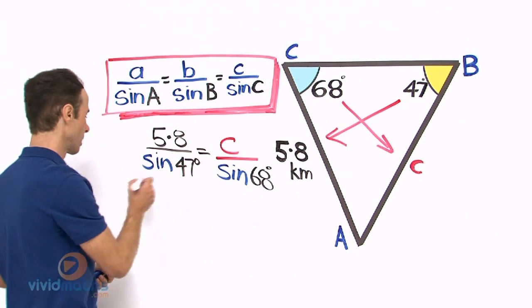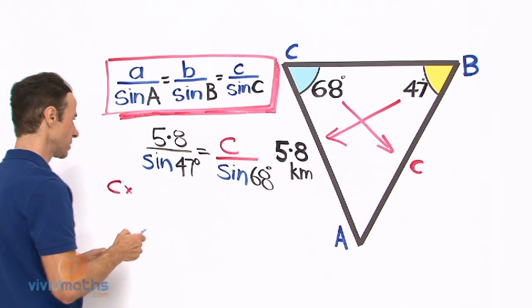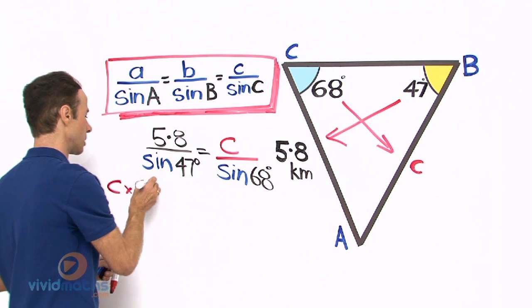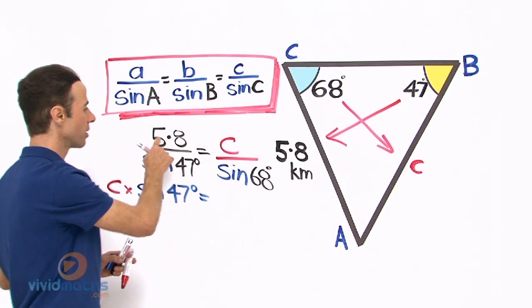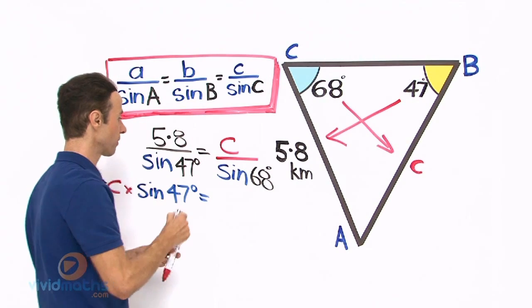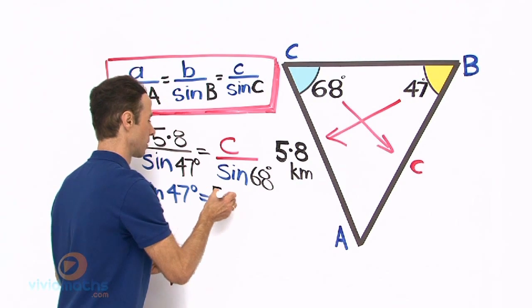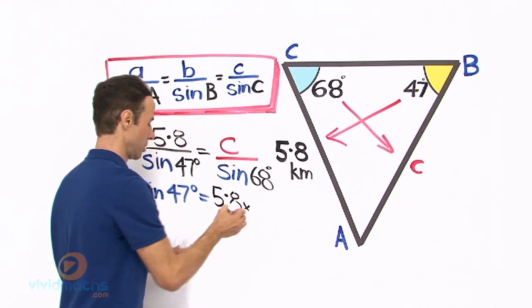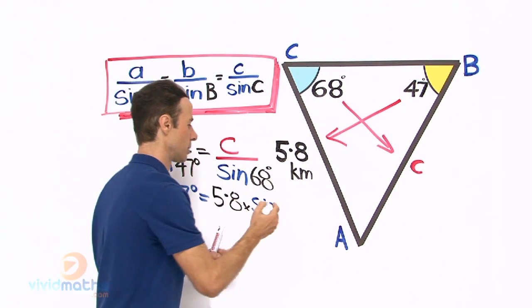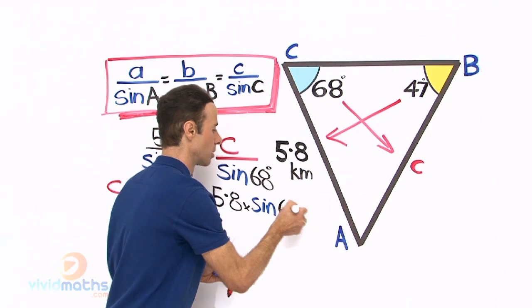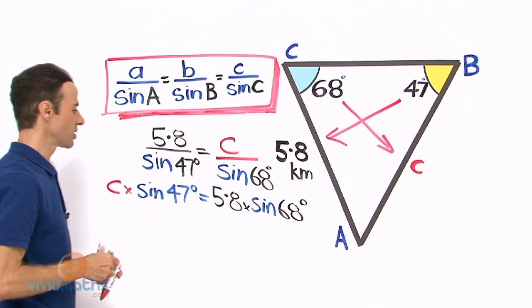So it is going to be c times sine 47 degrees, and that equals 5.8 times sine 68. There is our equation.